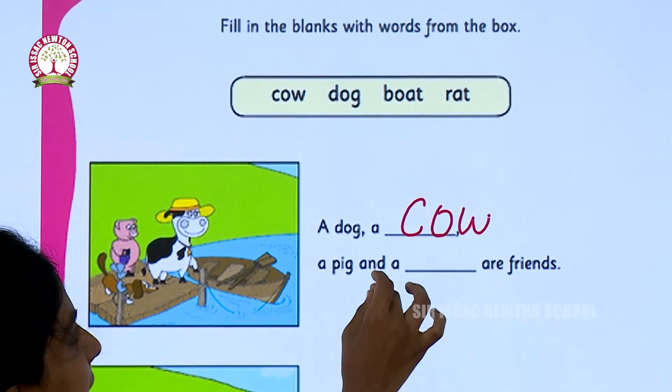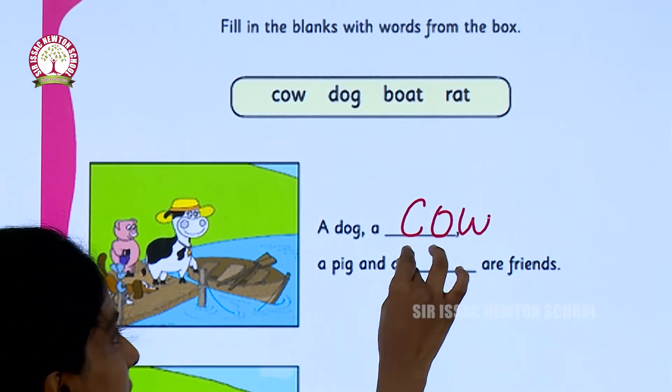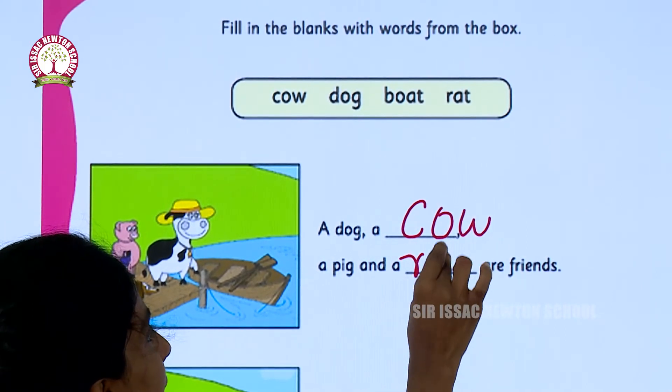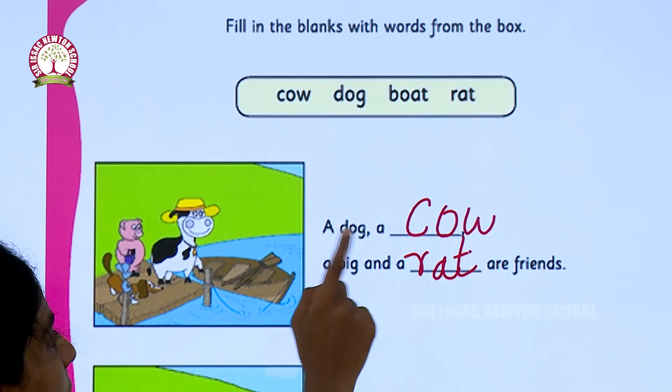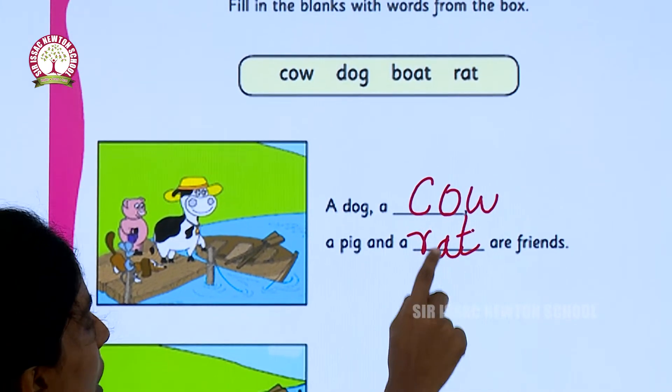A pig and a rat. What is the spelling for rat children? R-A-T rat are friends. A dog, a cow, a pig and a rat are friends.